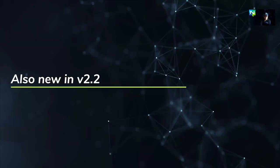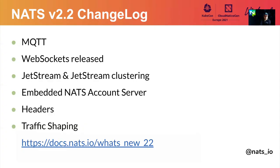Also new in this release — recommended to check the changelog — is initial MQTT support. WebSocket is also part of the release, as is Jetstream and Jetstream clustering. There's an embedded NATS account server you can use to avoid the HTTP-based one. Jetstream uses message headers heavily, but regular NATS subscriptions can also use those headers. That's why there were two new protocols: HPUB and HMSG. Other features such as traffic shaping are also included. I recommend checking the changelog in the NATS documentation.